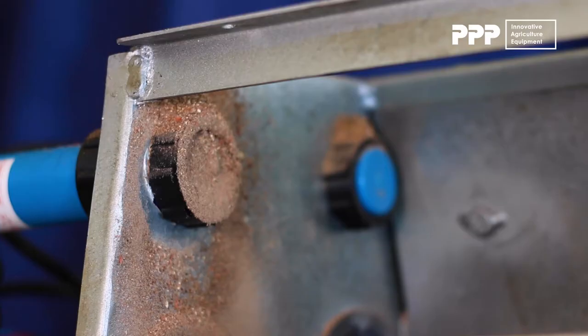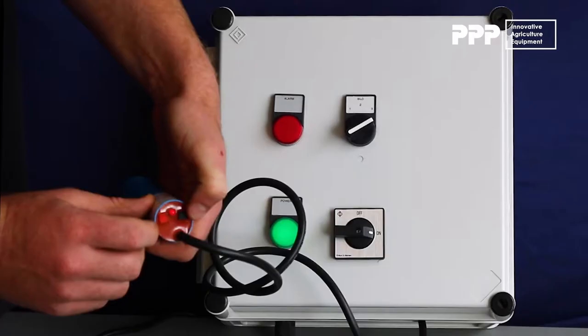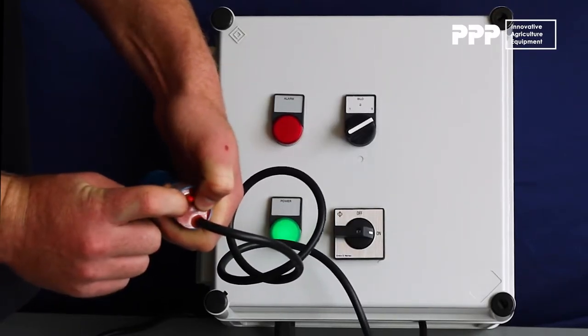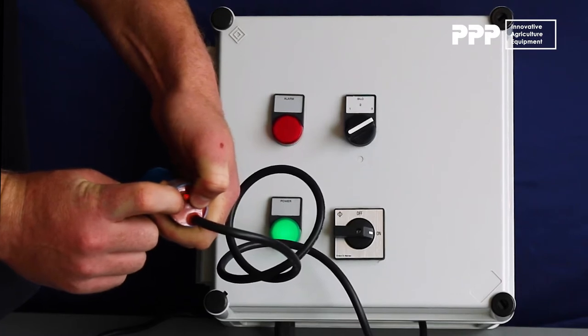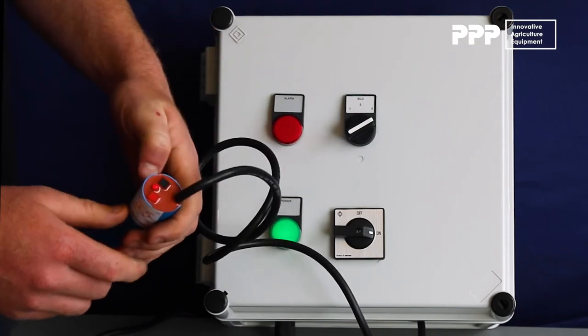To calibrate the sensor you need to make sure there is no meal in front of it inside the boot. You can then push the square red and black buttons until the LED in the middle goes black. Once it goes black quickly release the buttons and the sensor will be calibrated.